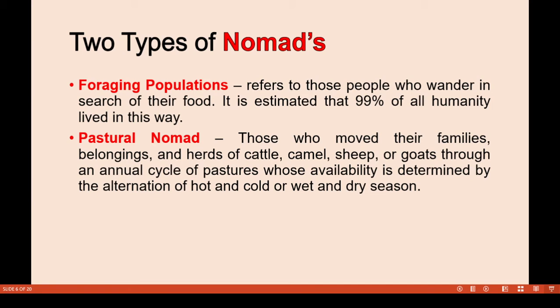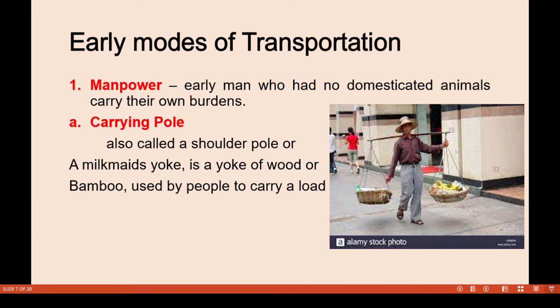Pastoral nomads are people in groups who move with their belongings and herds of cattle and camels from place to place to find good pasture land. Their movement is determined by the alternation of hot and cold, or wet and dry seasons.